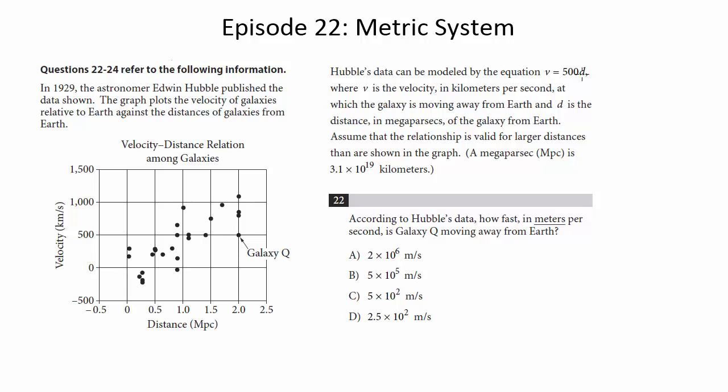Hubble's data can be modeled by the equation V equals 500d, where V is the velocity in kilometers per second at which the galaxy is moving away from Earth, and d is the distance in megaparsecs of the galaxy from Earth. Assume that the relationship is valid for larger distances than are shown in the graph. And a megaparsec is 3.1 times 10 to the 19th kilometers.